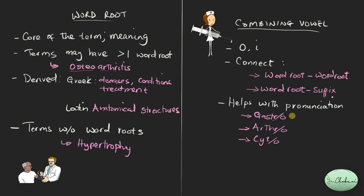The convention is that when using a combining vowel, you use a diagonal line and then write the combining vowel. So it's: diagonal line, then combining vowel. That's how you write your combining vowels.